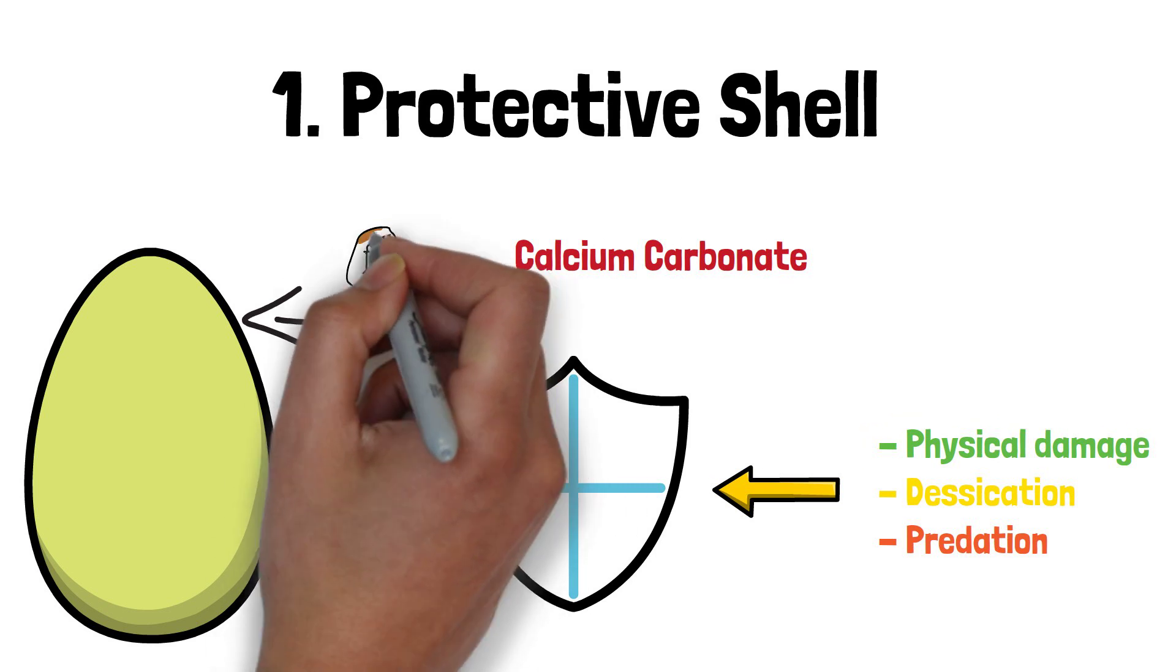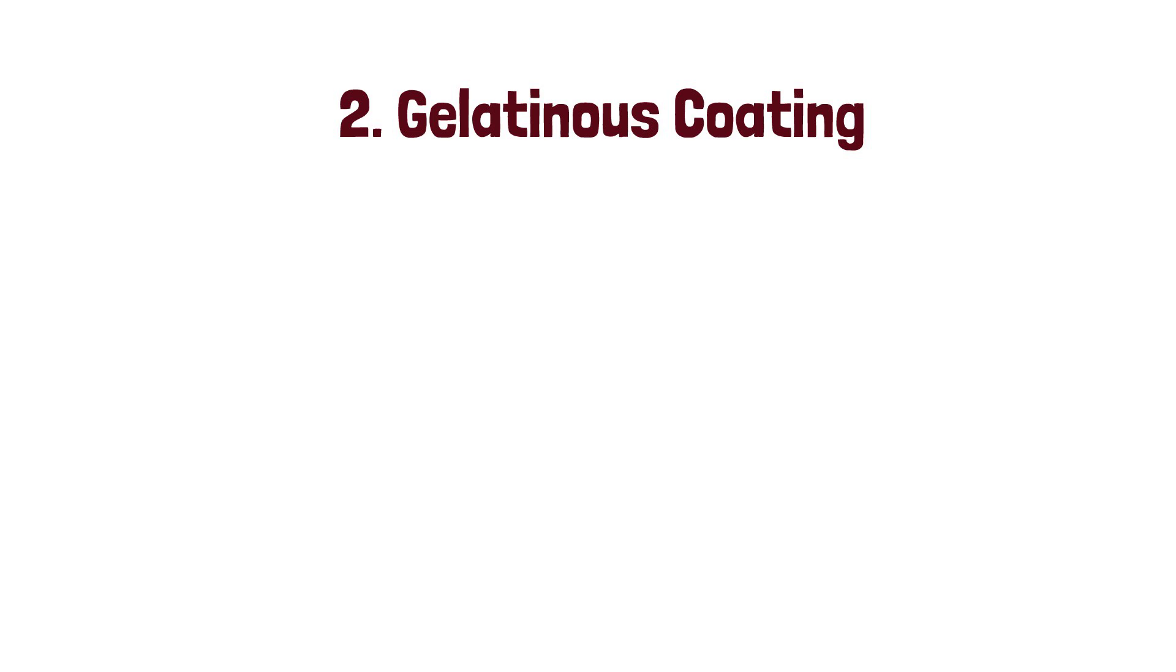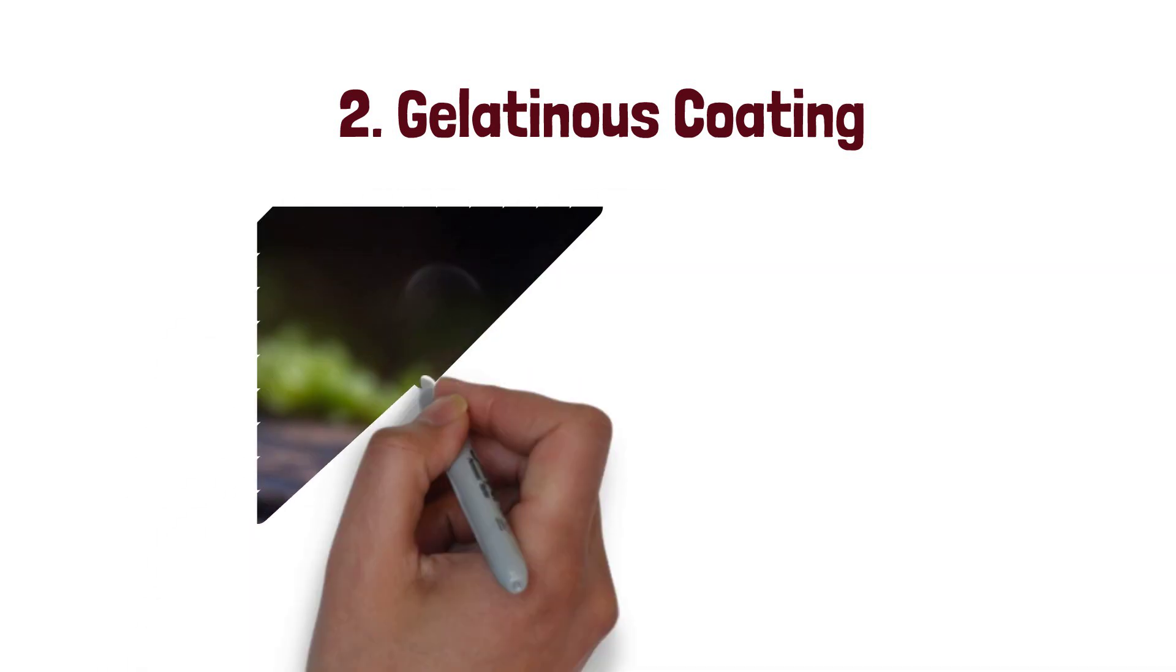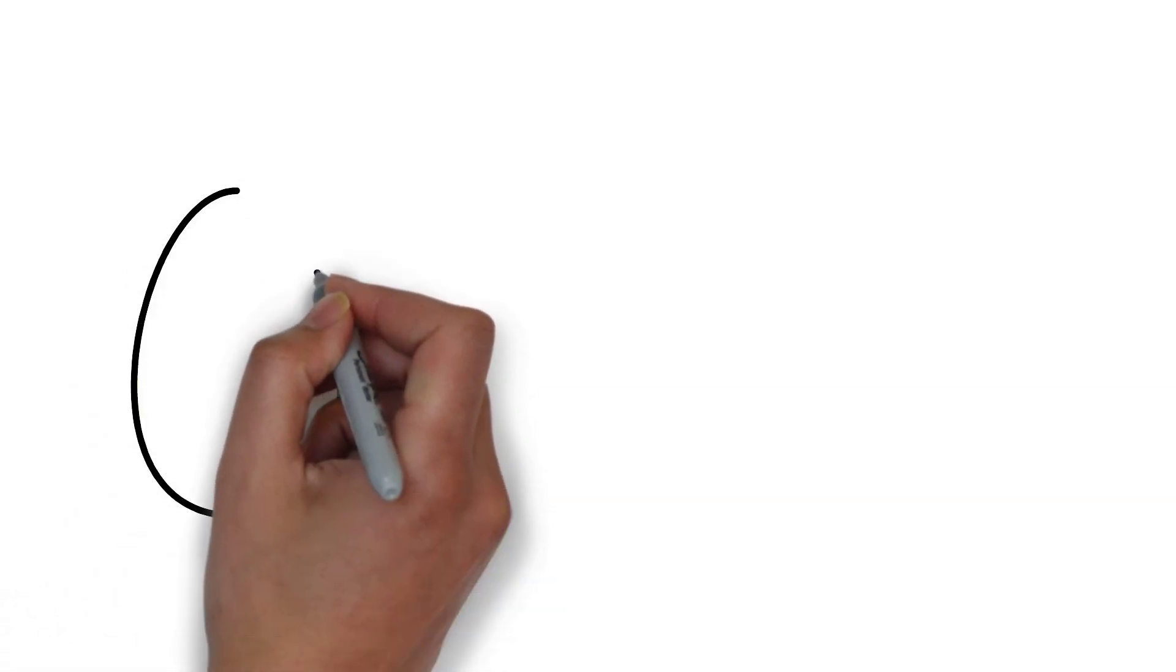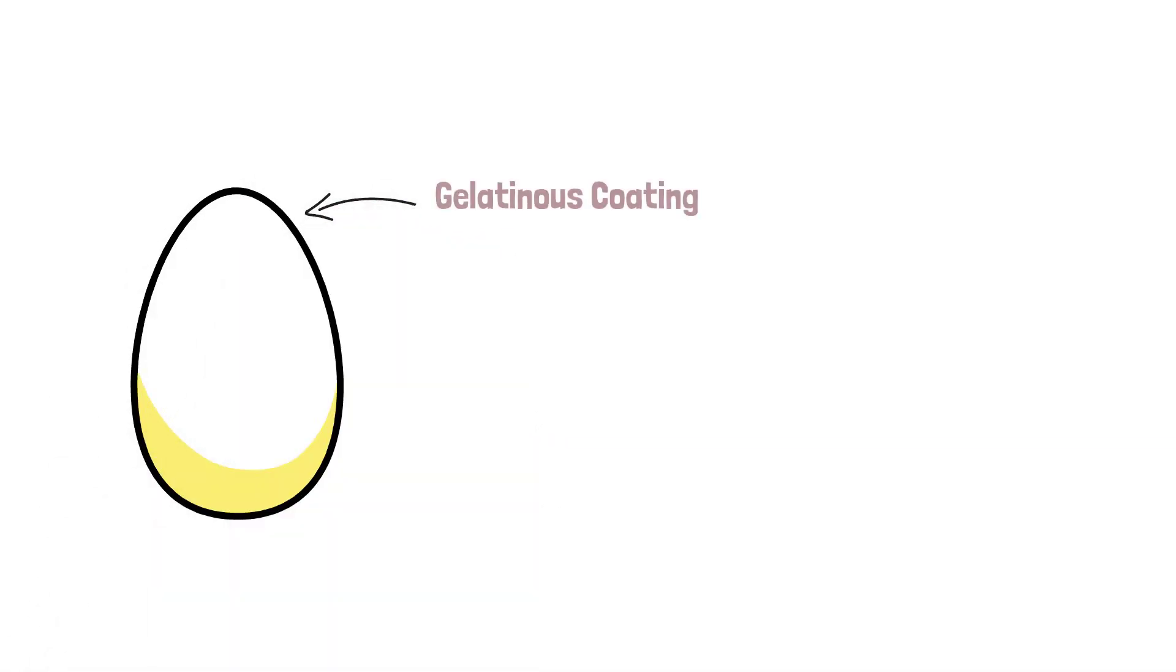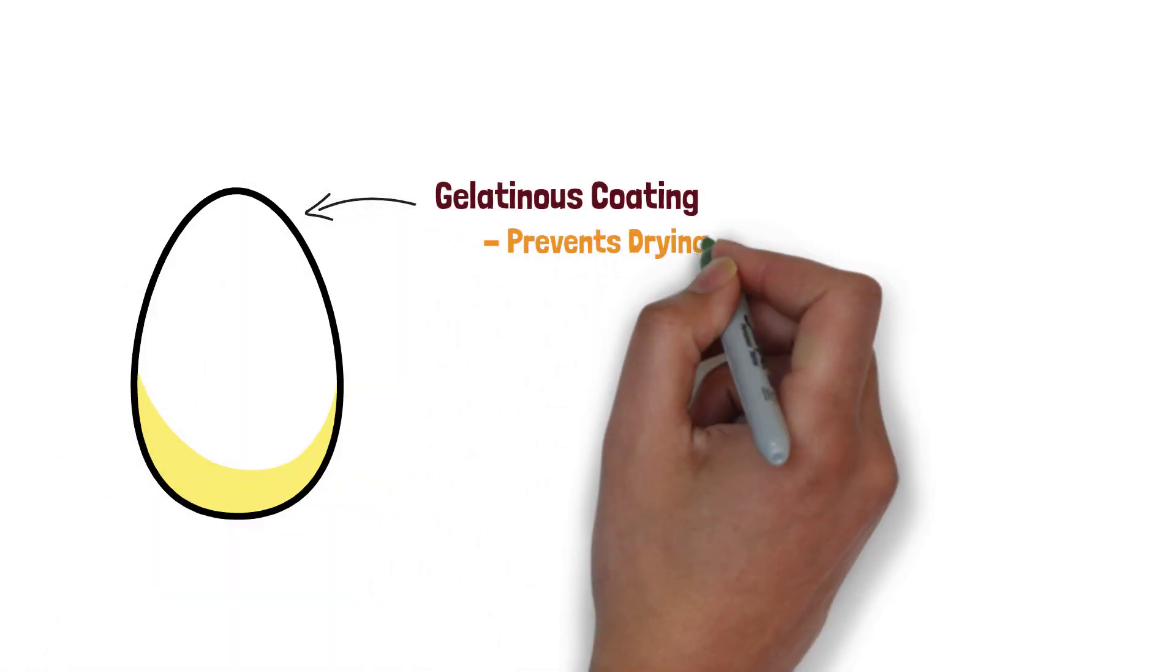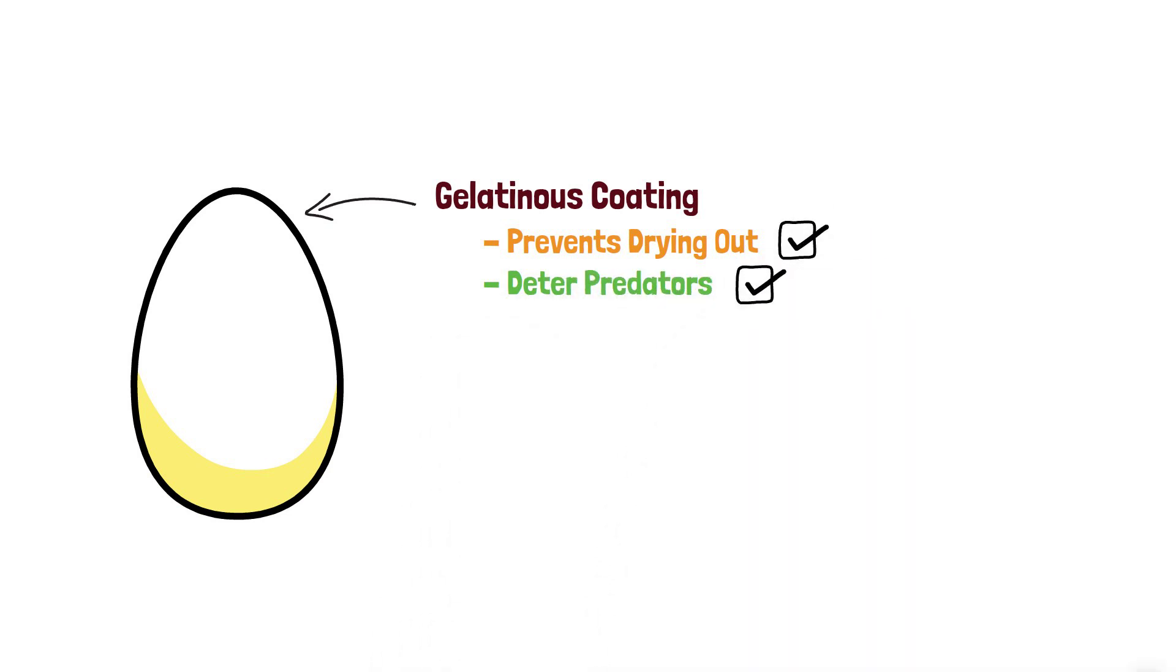2. Gelatinous coating. Snail eggs are often covered with a gelatinous substance that serves multiple purposes. This coating helps maintain a moist environment around the eggs, preventing them from drying out. Additionally, it acts as a deterrent against predators, making it difficult for them to access and consume the eggs.